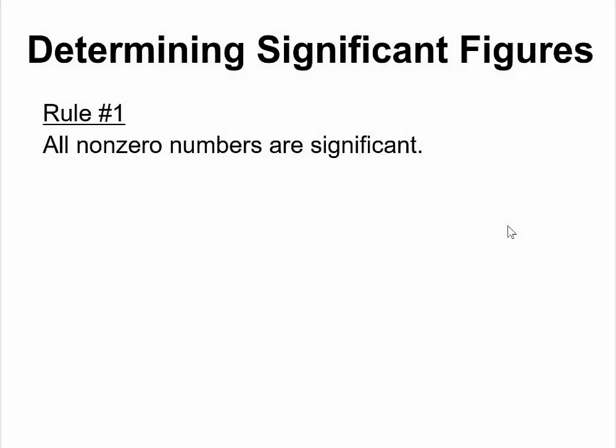Because we make measurements in science when we are performing experiments, measurements have inherent uncertainties in them. That means we always end up in some cases where some numbers are significant and some numbers are not. How do we determine the number of significant digits in a measurement? There are rules that we follow when we are determining significant figures.